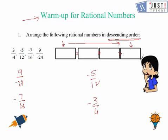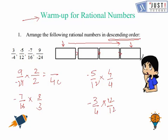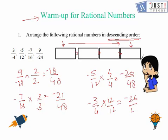To arrange them in descending order we can make the denominators the same. So we multiply by 2 here, 2 here, 3 here, 4 here, and 12 here. Now the denominator is 48: we get minus 18 over 48, minus 21 over 48, minus 20 over 48, and minus 36 over 48. Now all denominators are the same.